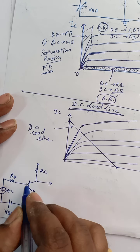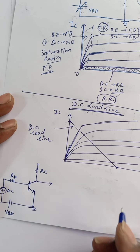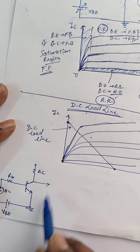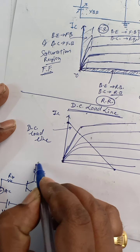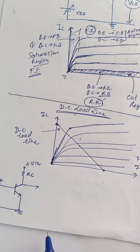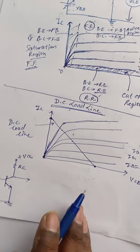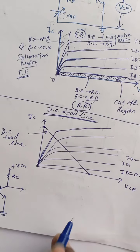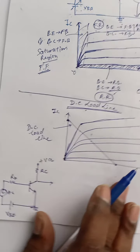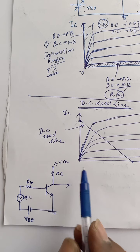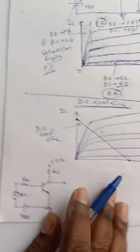RB is present, and collector current flows through RC. We find out the coordinates of these two extreme condition points for the transistor. Consider first that the transistor is operated at the extreme condition of saturation.